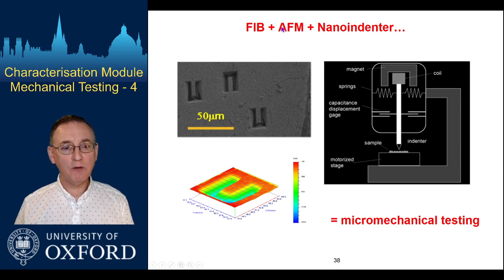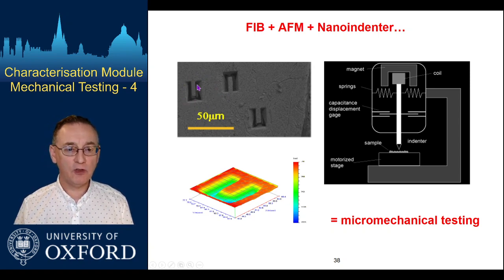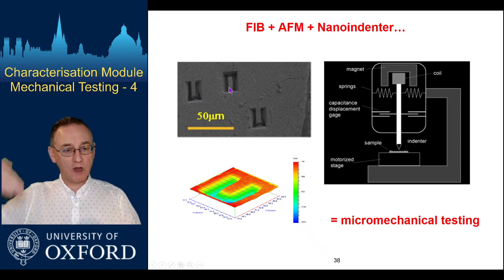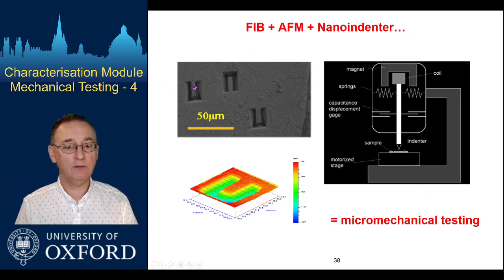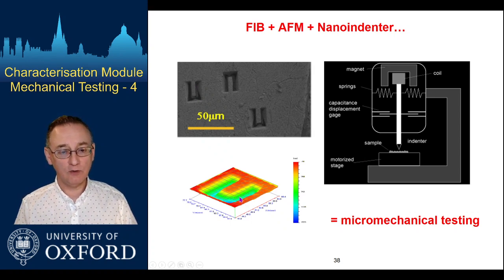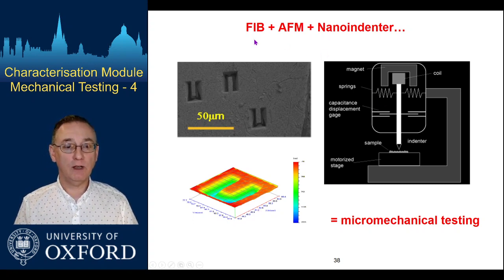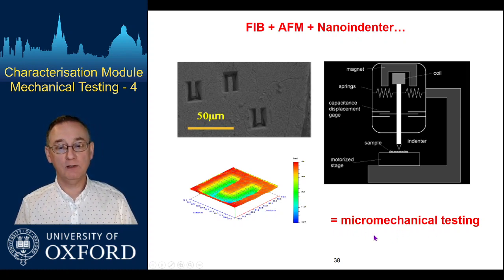At the same time, we had focused ion beam instruments becoming more and more available, which allow us to mill into a sample surface some small micron-scale structures. In this case, we've come in at an angle and undercut from two different directions to create a freestanding cantilever. In our nano indenter, we can use it as a crude AFM-type tool to image where the cantilever is, place the load point on the free end, press down, and perform a very small-scale bend test. So can a FIB plus the AFM function of a nano indenter allow us to do mechanical testing and get stress-strain data down at the micro scale?